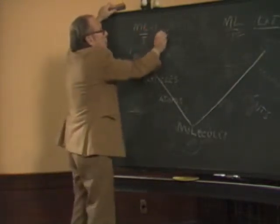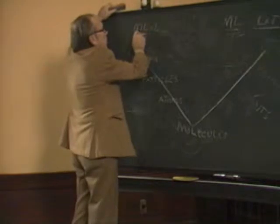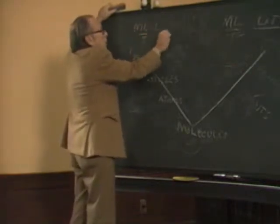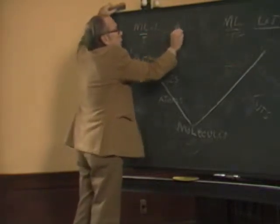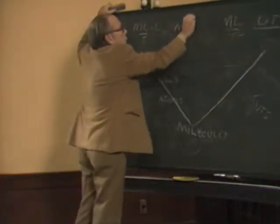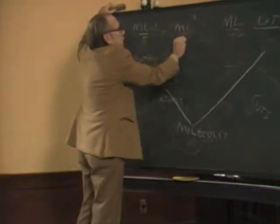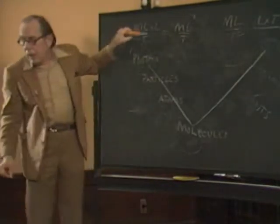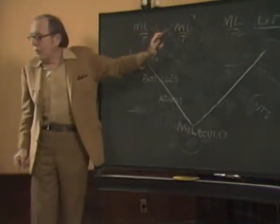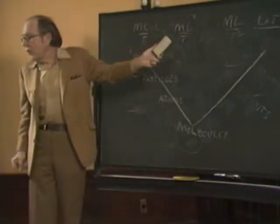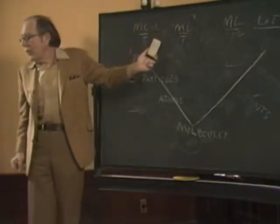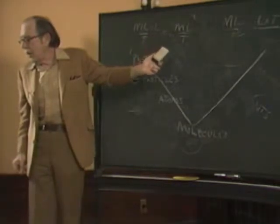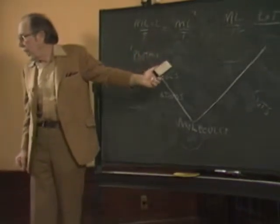So you can see by complex mathematics that the product is ML squared over T — the same as before. In other words, the product of the disturbance of position and momentum is equal to a unit of action.